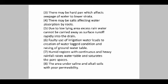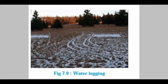Faulty irrigation raises the groundwater table. In humid regions with continuous and heavy rainfall, the water table rises and it saturates the pore spaces. Lastly, areas under saline, alkaline or salty soil with poor permeability are largely affected because improper drainage leads to various bad effects in the field area.